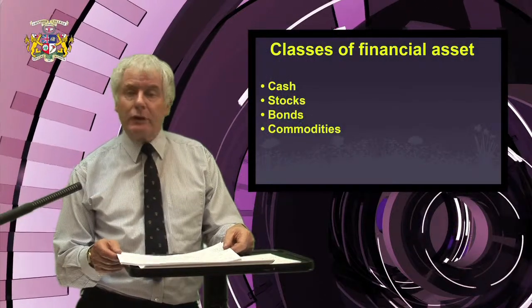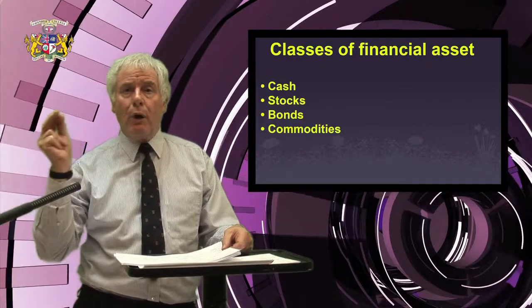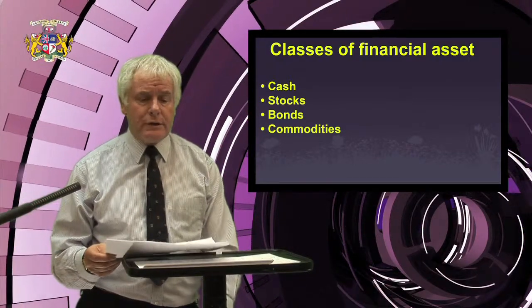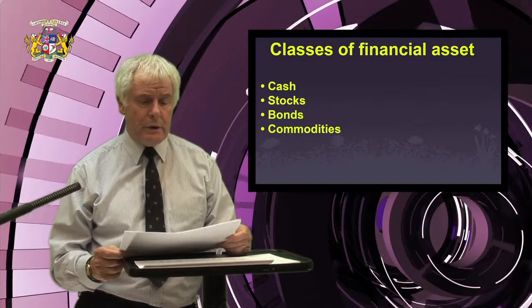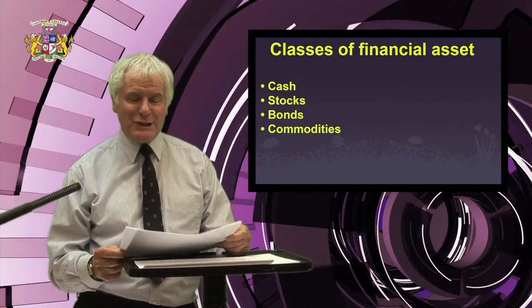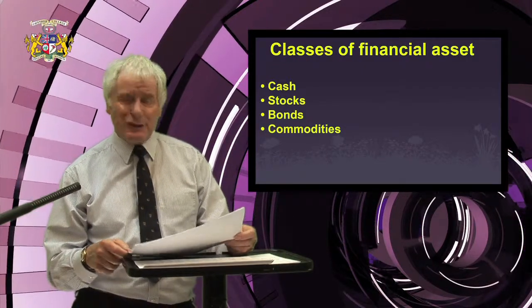Hello, today we're going to be discussing financial management and investment, and this will be part one. This is an introduction to financial management and investment. At the beginning we need to realise that there are four different classes of financial asset: cash, stocks, bonds, and commodities. We will start by considering the theory and practice of investment, whether it is for corporate funds, company funds, or if you wish to become your own stockbroker.